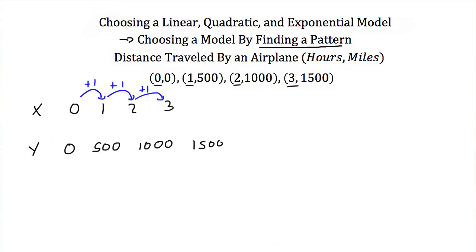My y values from 0 to 500, I have to add. I cannot multiply because you can't multiply 0 by anything and get anything other than 0. So this is an addition of 500. Now between 500 and 1,000, that's another addition of 500. And from 1,000 to 1,500, that's another addition of 500. This difference of 500 between each one of our y values is called our first order differences.